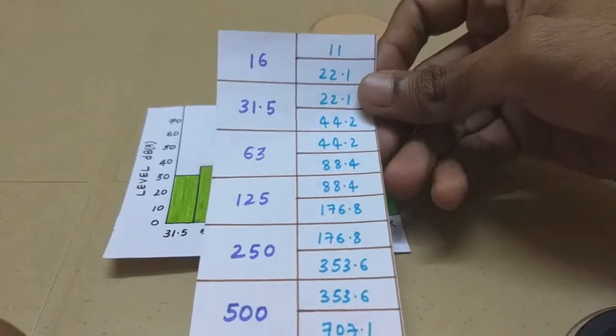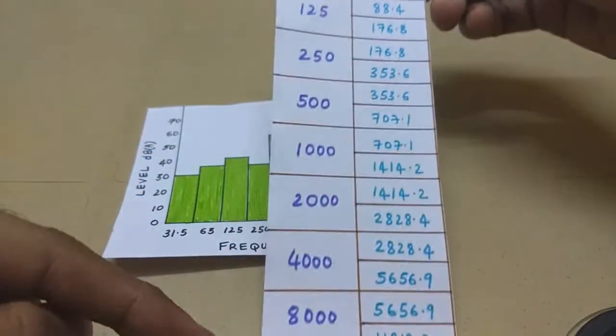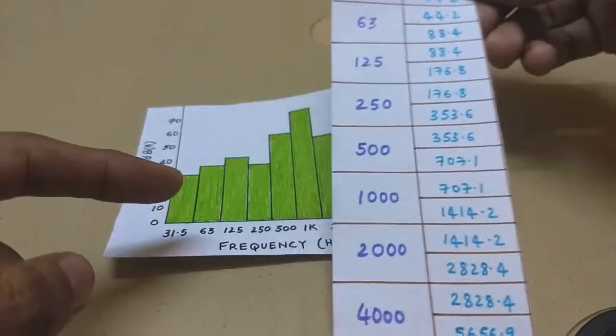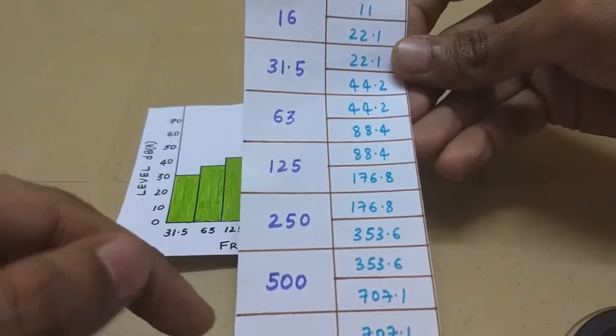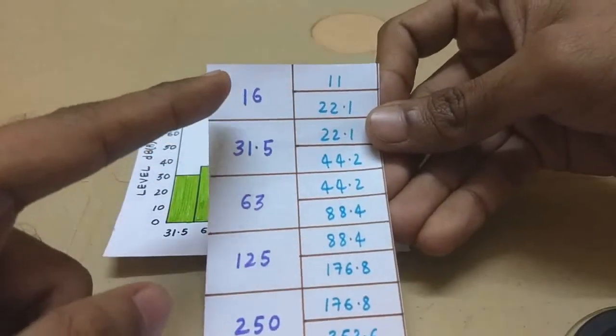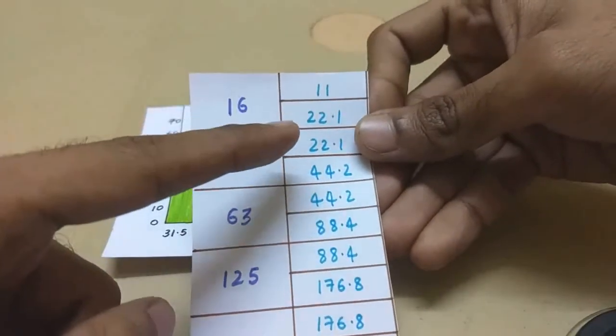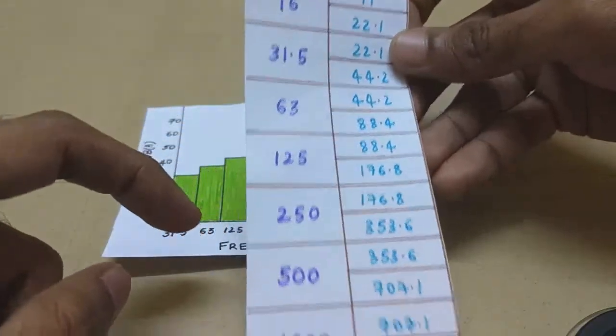So these are the frequencies. I am considering 16 to 16K but you can also consider any other range you want. So this is the center frequency and these are the upper and the lower frequencies.